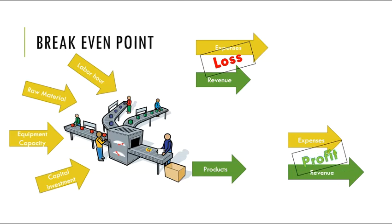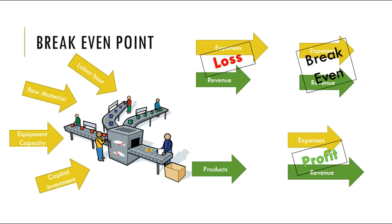We will be in profit, as then we are making more money. However, there is a special case where our expenses are exactly equal to our revenue, and in engineering economy we call that special situation break-even. At the break-even point, the expenses and revenues are exactly the same. So let's look at the formula of break-even point analysis.